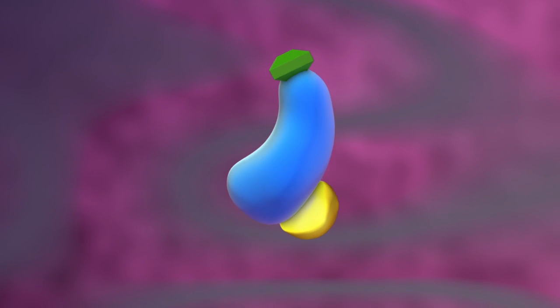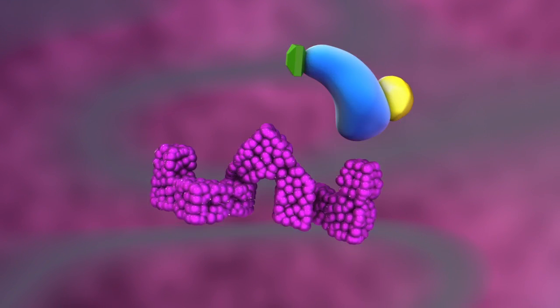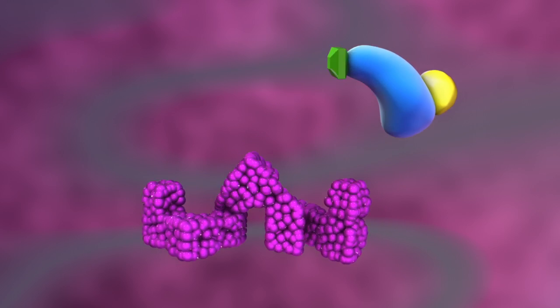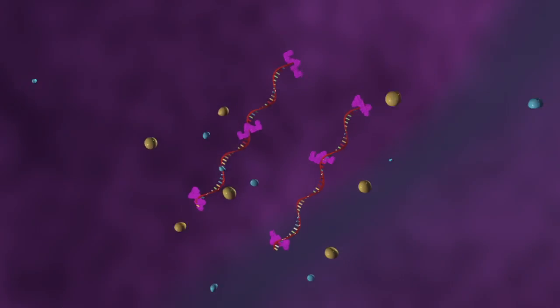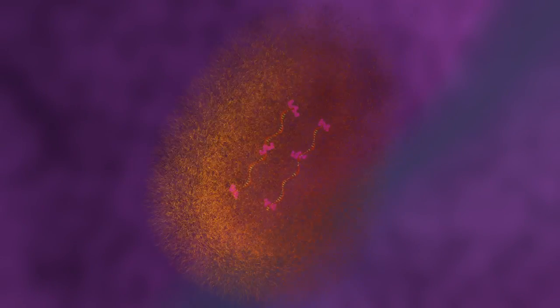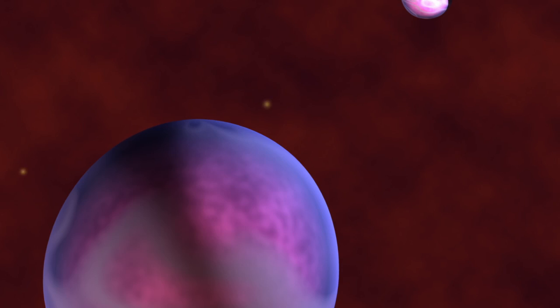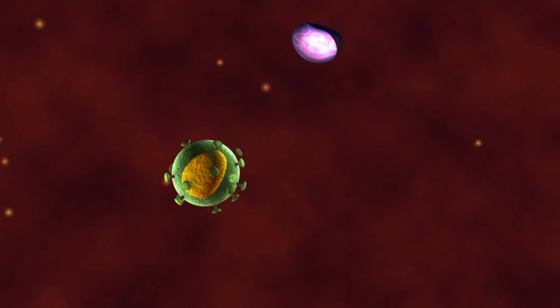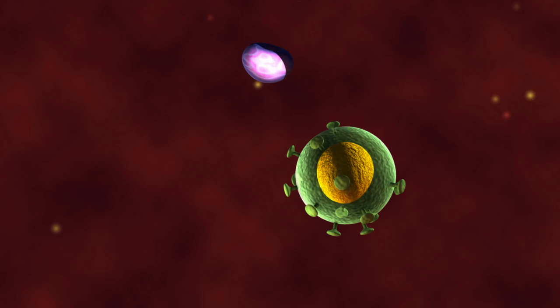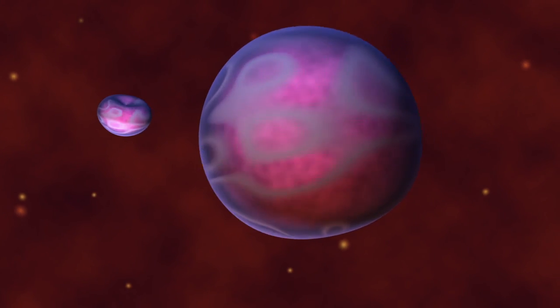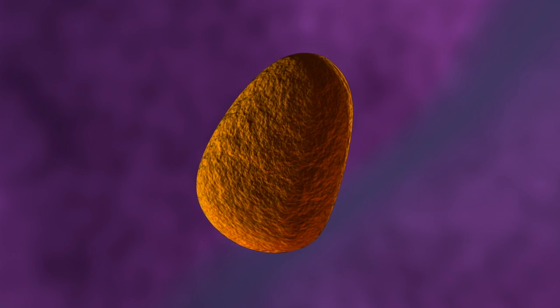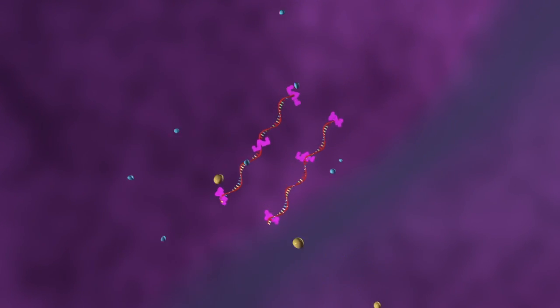When VIF destabilizers and VIF dimerization antagonists protect A3G from degradation, A3G will become part of the viral package. Assembly of A3G with HIV is analogous to Greeks entering a Trojan horse, because when the virus leaves the producer cell and enters the target cell, A3G is ready and in position for host defense.